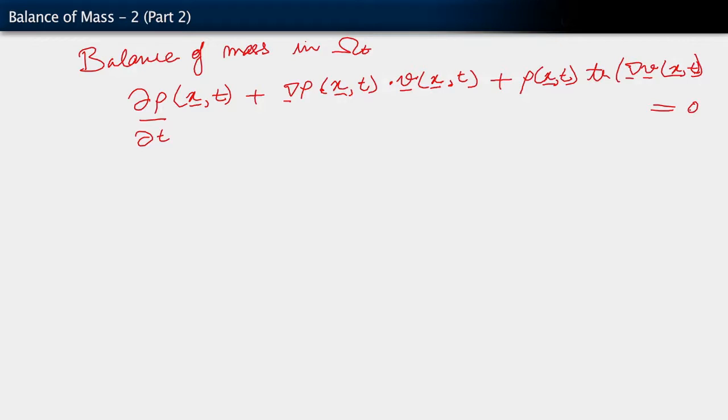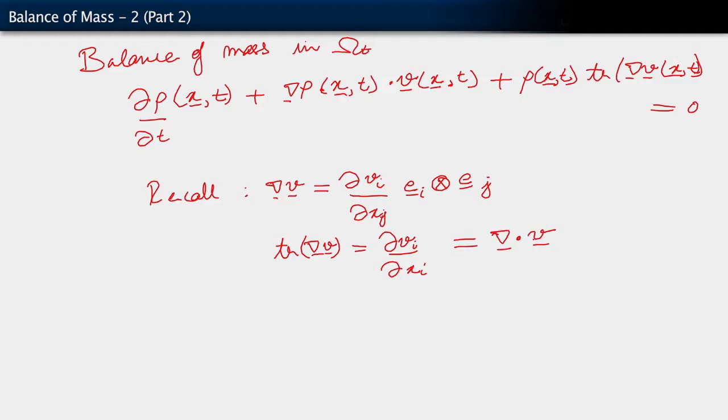Now, the trace of the gradient of v has another form. It's the same thing, but it can be written differently. Recall gradient of v has the following form: derivative of little v_i with respect to little x_j, e_i tensor e_j. So trace of grad v, trace of nabla v is partial of v_i with respect to x_i. What is this? Divergence of v.